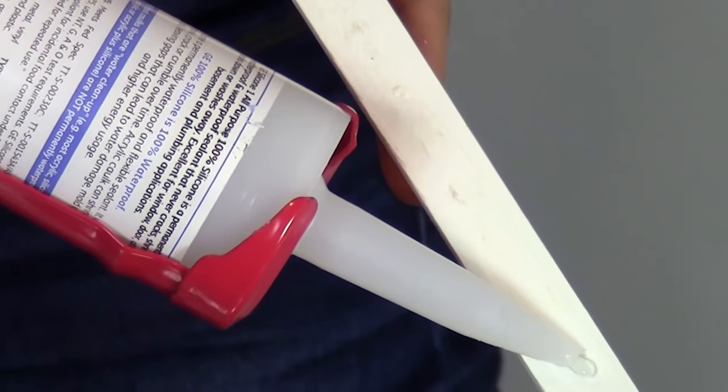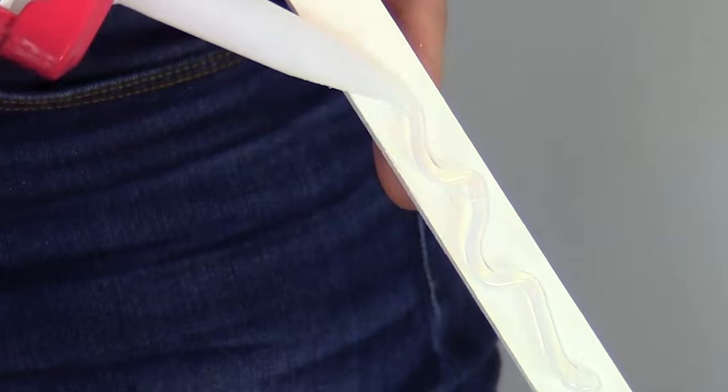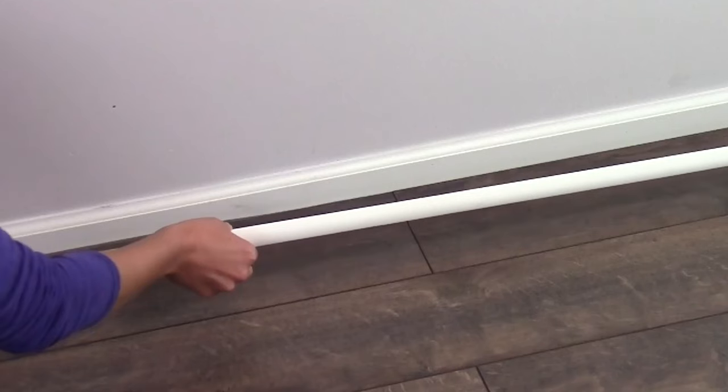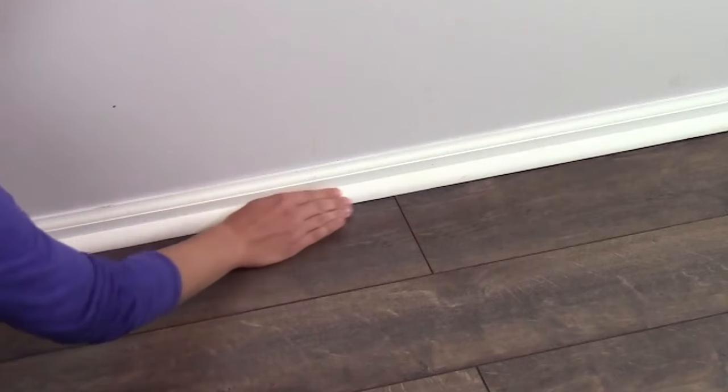Also apply the silicone sealant to the face of your molding that will rest on the floor to keep water out. Place the molding against the floor, then nail it to the wall, not to the floor.